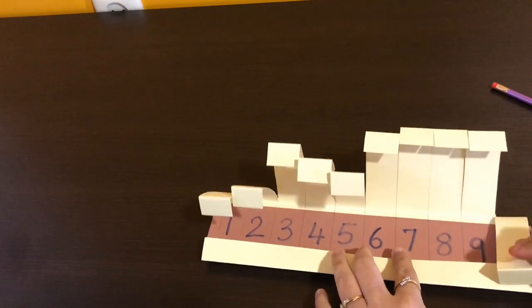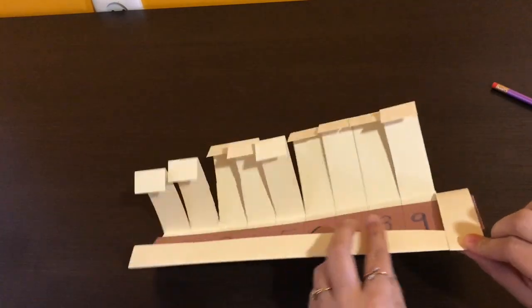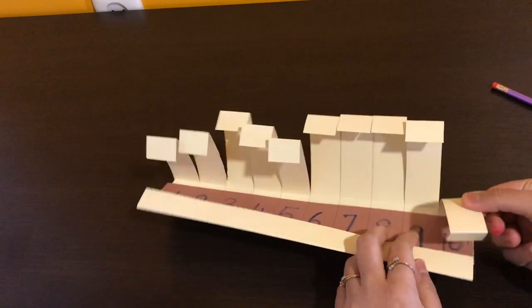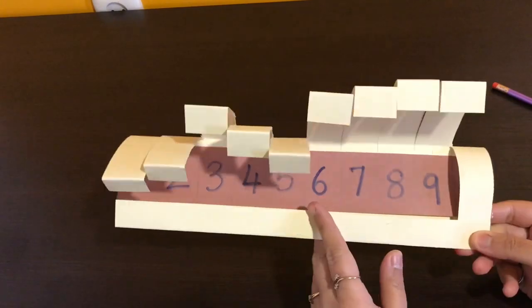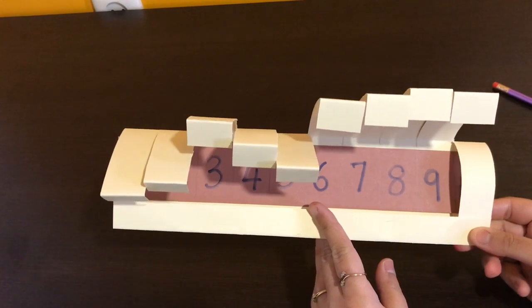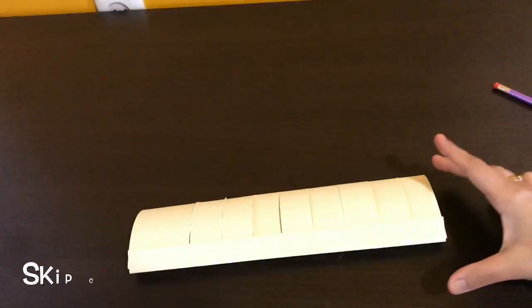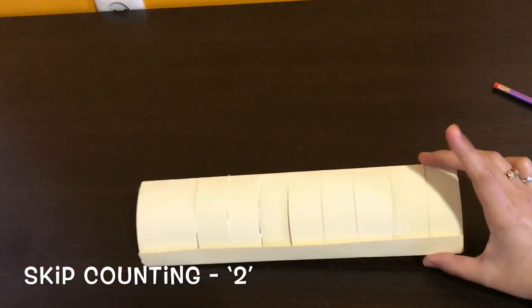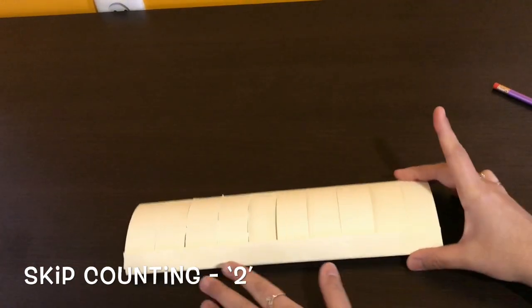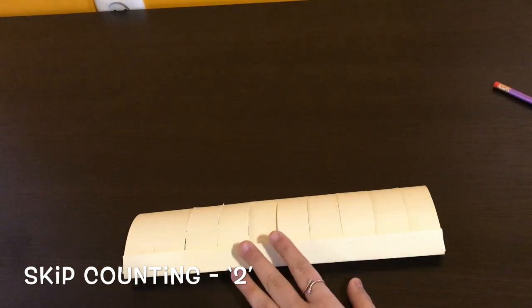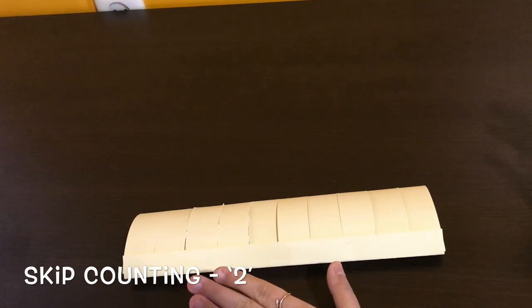So when you fold, either you can put this flap like this or on the inside. Now the next step that we have to see is how to actually use this for skip counting. Now after folding all the flaps on the inside, I am showing the child how to skip count 2.